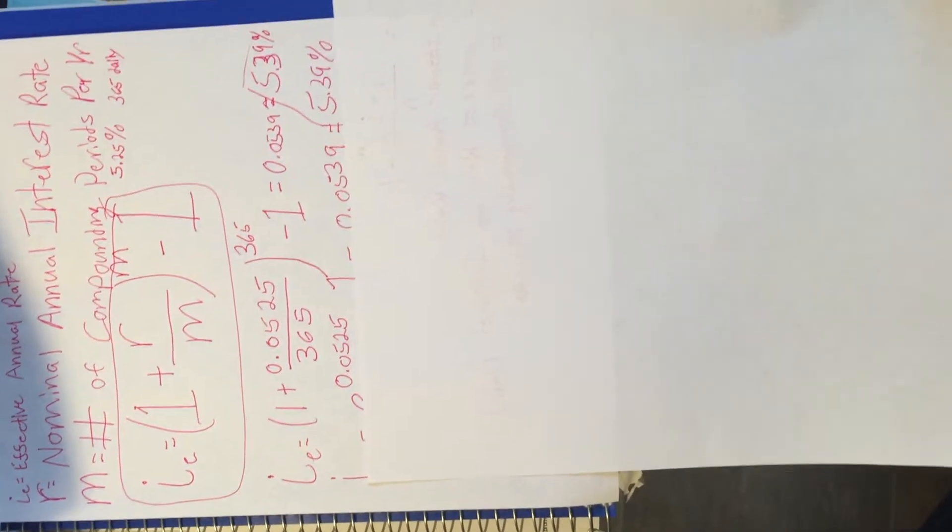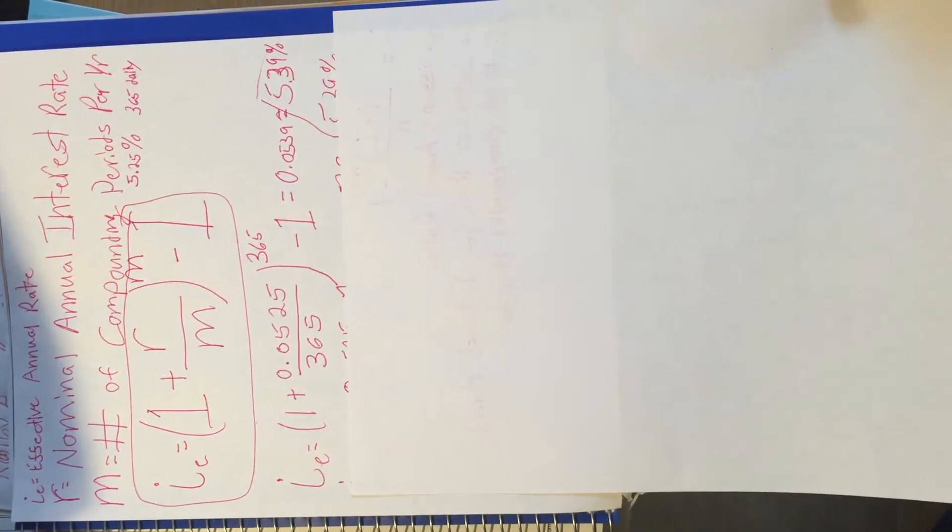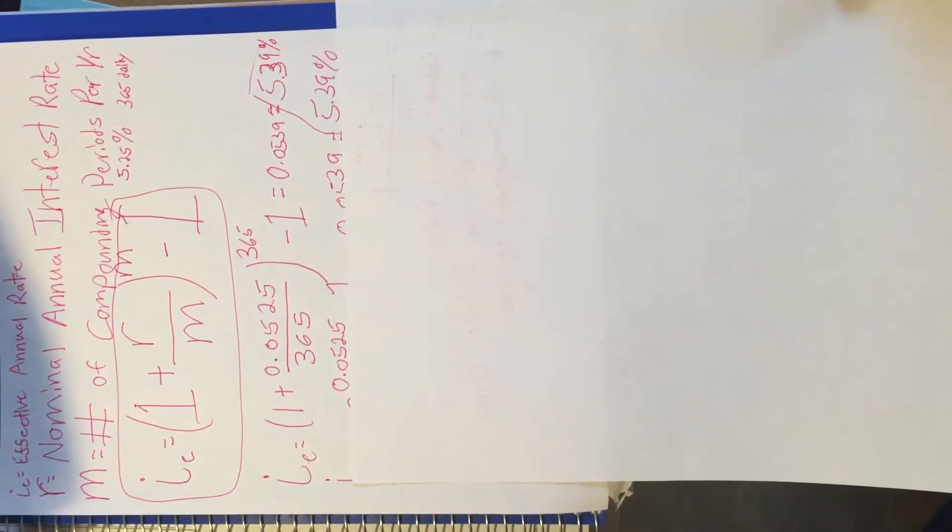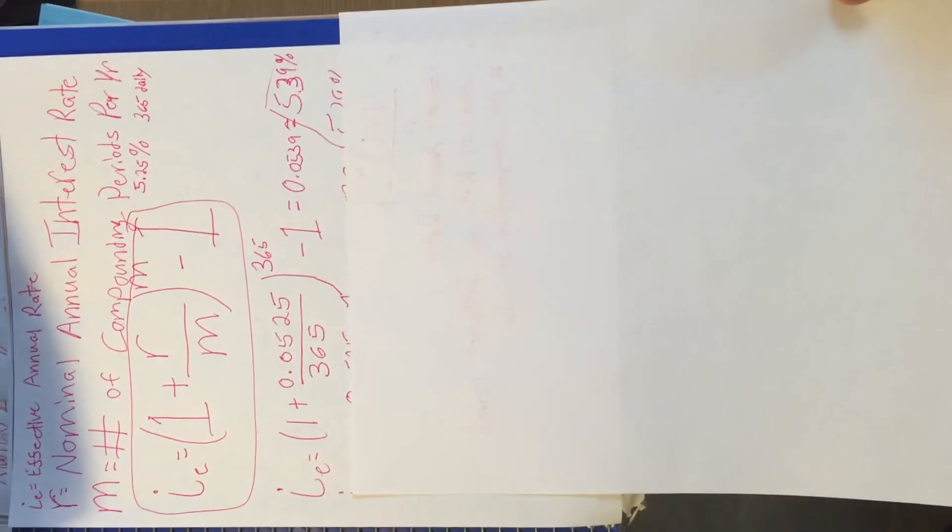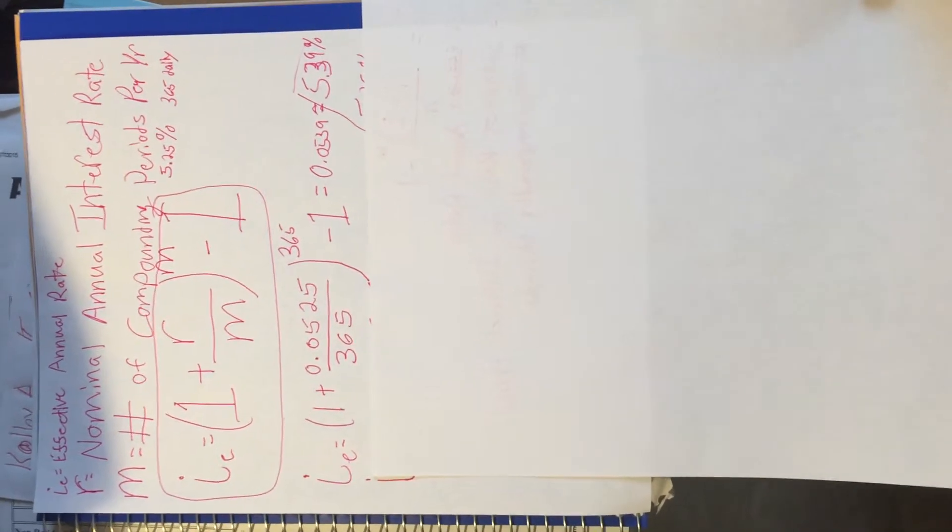But here is the formula. And I plugged in the numbers, the given data, which I did in terms of days. I did days per year since it said it was compounded daily for 365 days. So I plug in the numbers and you get 0.0539, and that equals 5.39% if you times it by 100.